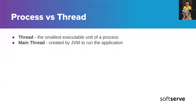Let's talk about thread. A thread is an independent path of execution through a program's code. Threads are created within the process, and each process has at least one thread. A thread shares the process resources — by resources I mean memory or other sources like files, etc.